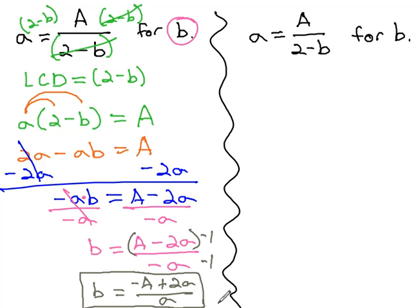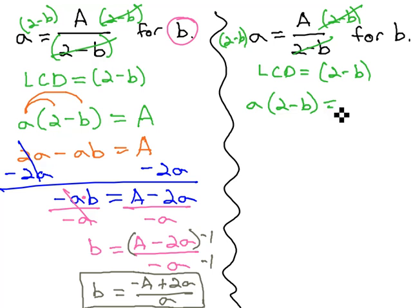That's one way to solve the problem. On the right side here, we're going to solve the same problem for b, doing it slightly different. The first step is the same. We identify the least common denominator, 2 minus b, and multiply that on both sides. When we do, we again get a times 2 minus b equals capital A.